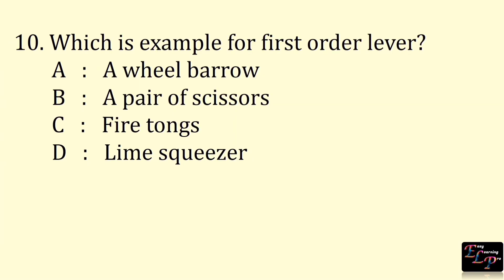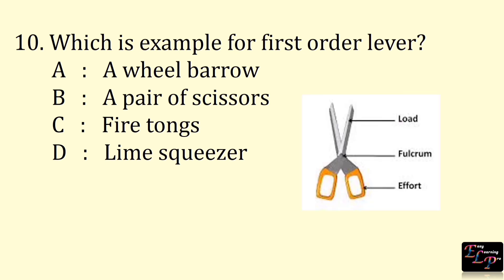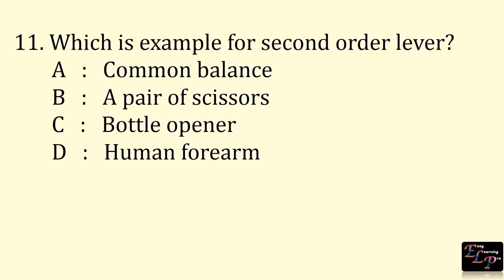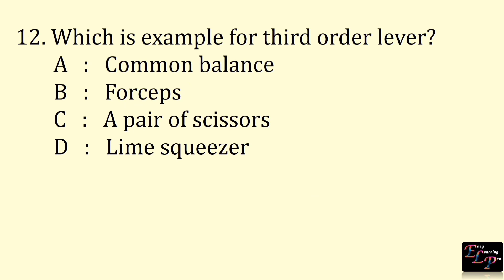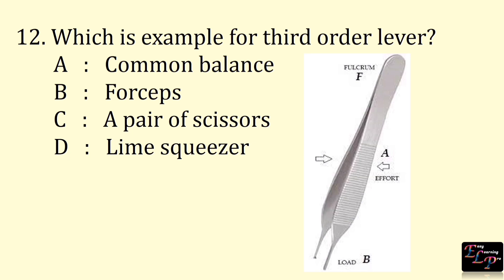The distance from the fulcrum to the load is called the load arm. Which is an example of a first order lever? Answer: a pair of scissors. Which is an example of a second order lever? Answer: a bottle opener. Which is an example of a third order lever? Answer: forceps.